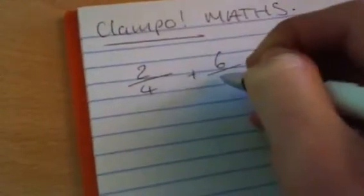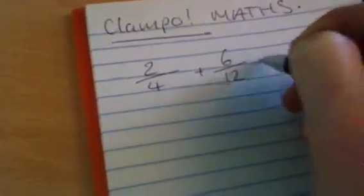Right, okay. He wants to know how to add a fraction. So, let's add 2 over 4 plus 6 over 12. I don't know whether this... Okay, so 2 over 4 plus 5 over 3.